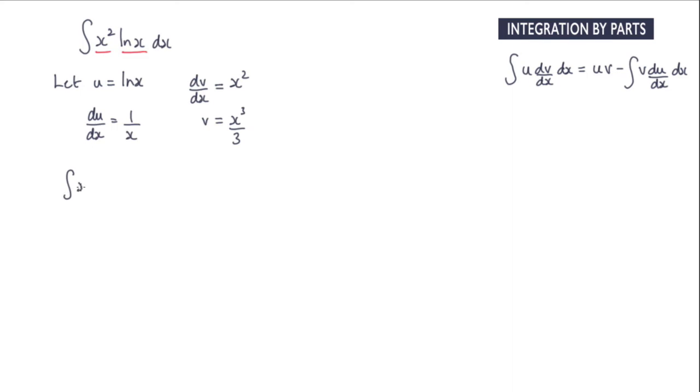So we have the integral of x squared log x dx is equal to u multiplied by v. So x cubed over 3 multiplied by log x, which is x cubed log x over 3 minus the integral of v times du by dx. So that's these two multiplied.